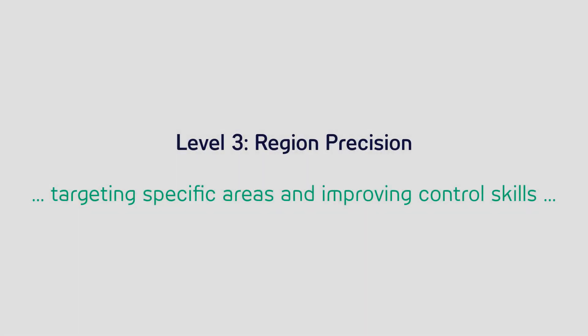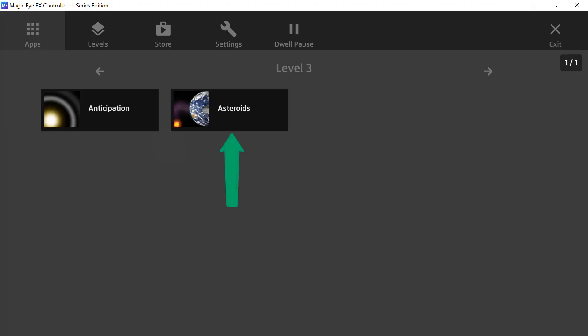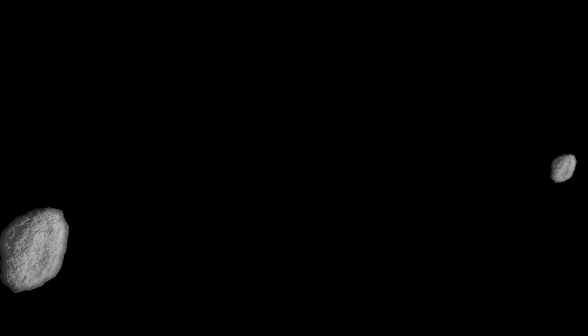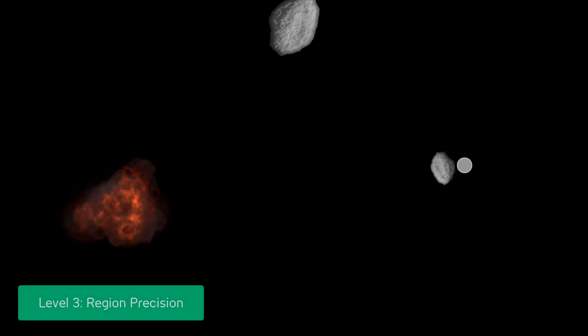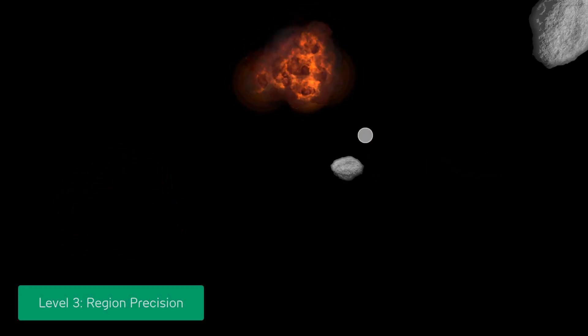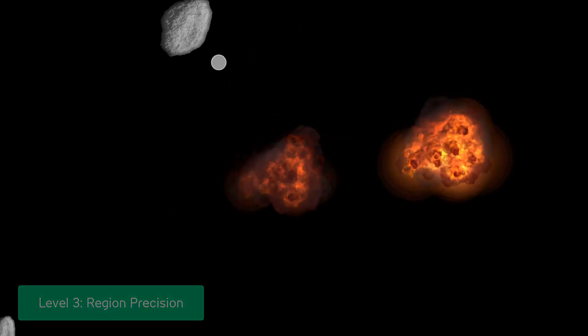Region precision stimulates visual attention by encouraging users to target specific areas of the screen, monitoring and improving their gaze control skills. In this Asteroids app, the moving target comes into different areas on the screen. Users control their gaze to each asteroid and dwell on it to make it explode. This process requires more accuracy and helps users achieve a greater level of control while still having a fun and engaging learning experience.